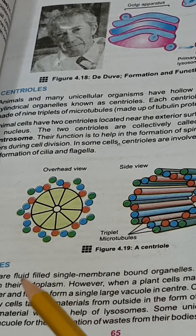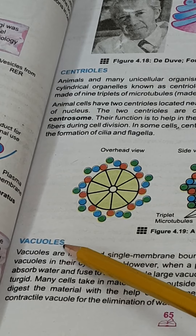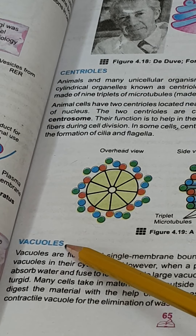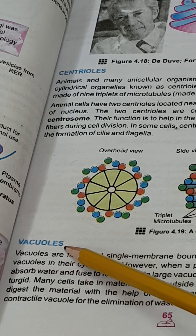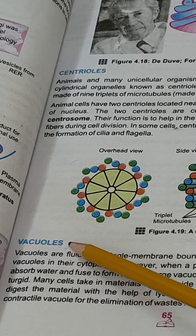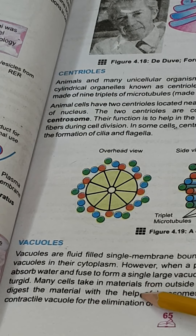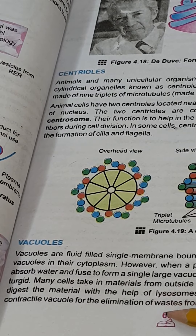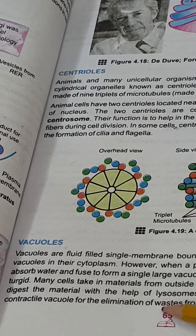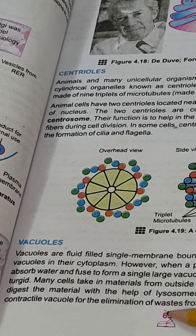The last organelle of the cell is the vacuole, which is a single membrane structure. One big vacuole is present in the plant cell, while in the animal cell small vacuoles are present. Vacuoles are responsible for the storage of material. Some vacuoles are responsible for the elimination or excretion of waste material from the cell, and those vacuoles are known as contractile vacuoles.